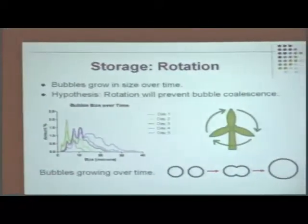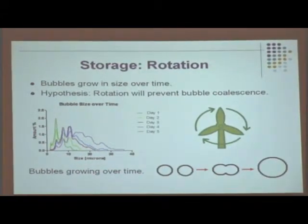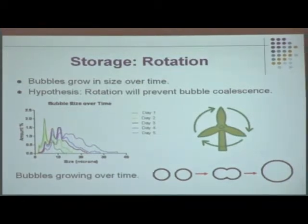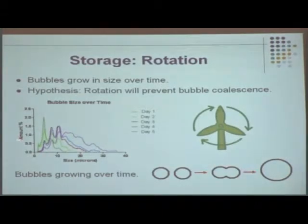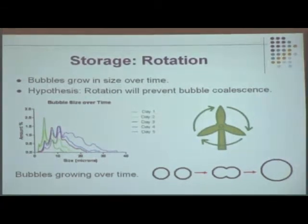The next experiment addresses an important fact: these marker bubbles grow in size over time. This graph helped us prove this point, representing the amount of marker bubbles at a certain size. On day one, shown in dark green, there were only three marker bubbles greater than 10 microns in size. However, as days passed, the marker bubbles started growing beyond 10 microns, with the purple line showing an average size of around 20 microns.